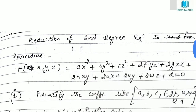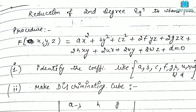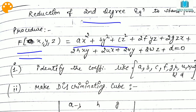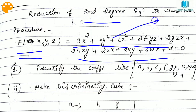The question involves the reduction of a second-degree equation to standard form. You will be given a second-degree function in x, y, z of the form ax² + by² + cz² + 2fyz + ... and you are required to reduce it to a standard form. I will tell you the basic approach for how to solve this type of question without going into too much detail.